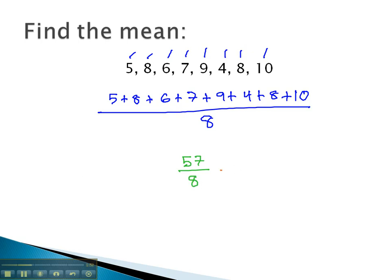When we do the 57 divided by 8, we get the number 7.125, which is our average or mean of this data set. 7.125 is a good measure of the center of approximately where this data falls around.